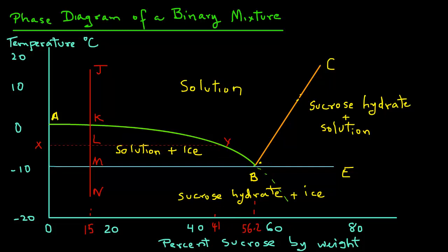This way we can determine the amount of ice formed at any time during the freezing process. When the system reaches temperature TM, the ratio of pure ice to solution may be calculated from MB divided by DM. The sucrose concentration of the solution is obtained by reading at point B as 56.2%.